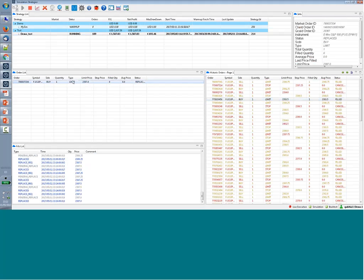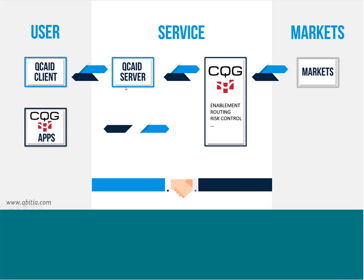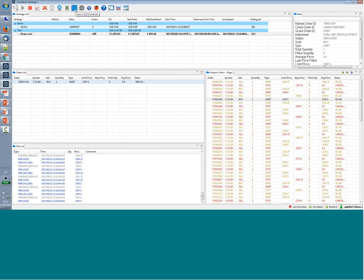The same applies for orders currently working on the market. Here is a limit order working on the market at the accepted price, and we can see the full history of this order. This is where the integration with CQG becomes important. The strategies are running on our server — they don't depend on your internet connection. They are directly connected with the CQG systems, receiving real-time data from CQG and sending orders that connect with all the markets in the world.